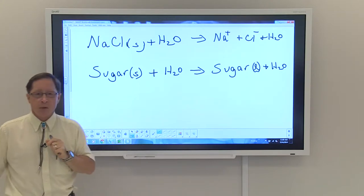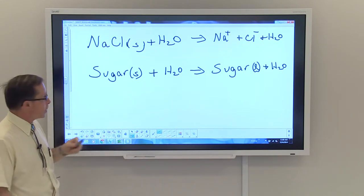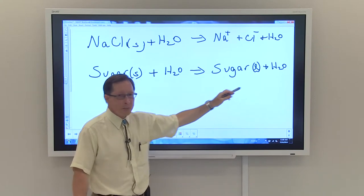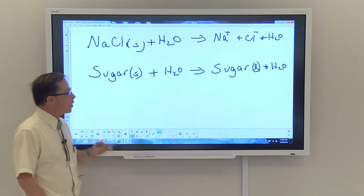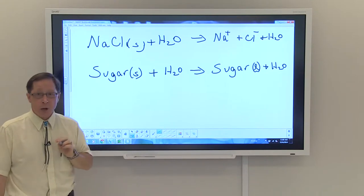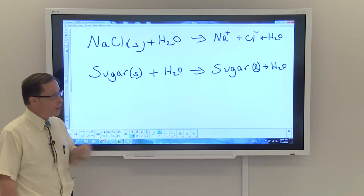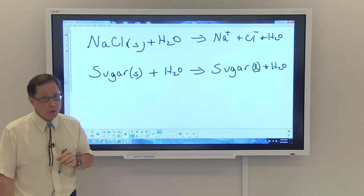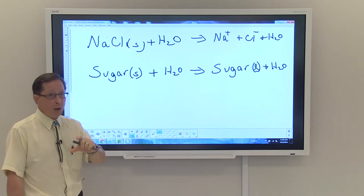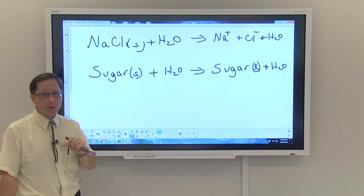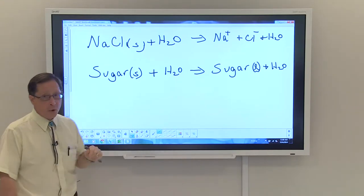If you do the same thing for sugar and you dissolve a certain amount of sugar in water, what you find is that the sugar becomes liquid. It mixes with the water, it dissolves, but the sugar does not ionize. So the sugar solution will not conduct electricity. If you do the same test with the sugar solution that you did with the salt solution, the light bulb will not light up because there's no electron flow within that solution. You have to have an electrolyte to do that.